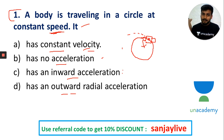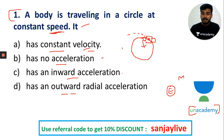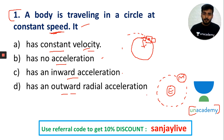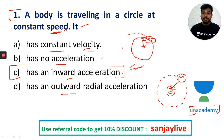So the object on the circular pathway has constant speed but not constant velocity, and therefore acceleration is not zero. For example, the moon revolving around the Earth, and the Earth revolving around the Sun — in these cases, there is an inward centripetal acceleration acting toward the center. The object feels inward acceleration while travelling at constant speed on a circular path.